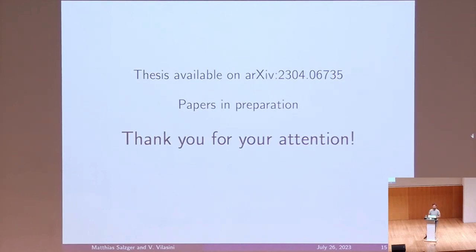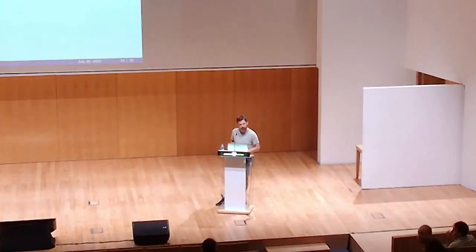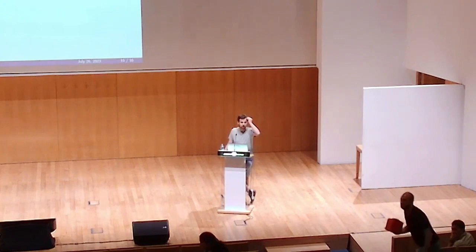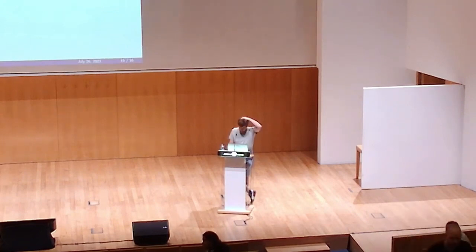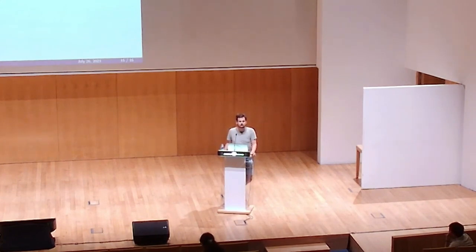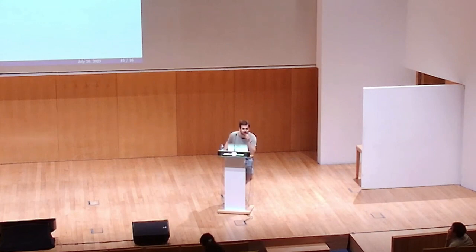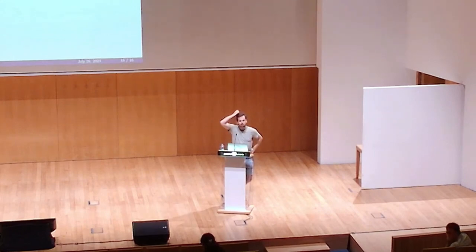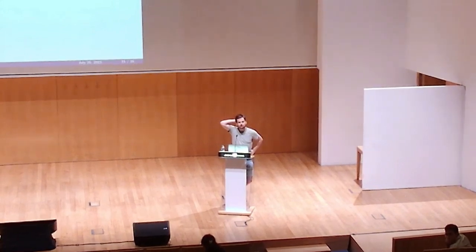If you have any questions, please ask. From the audience: process boxes are not closed under composition, right? Yes, because the closure is the causal boxes. So is there an interesting subset of causal boxes that is closed under composition and could meaningfully serve as process boxes? What lessons does this hold for the problem of composing process matrices?